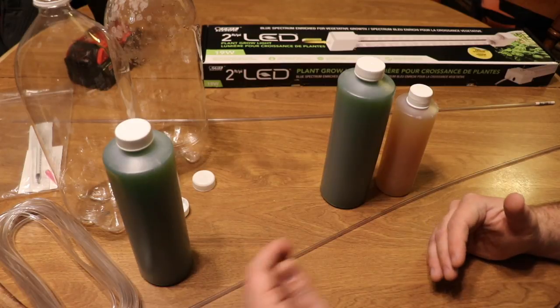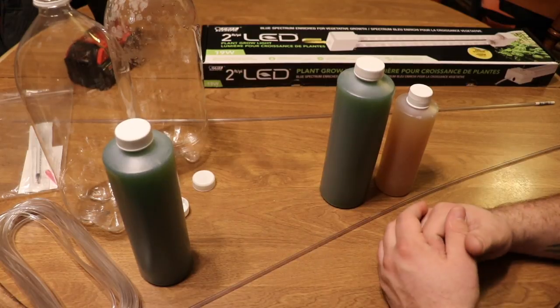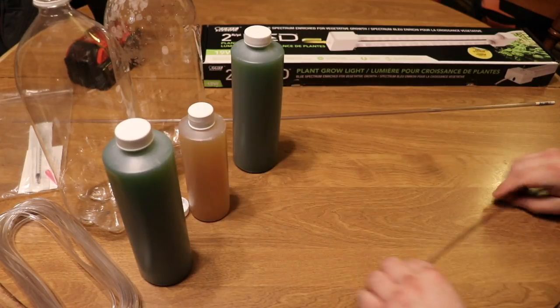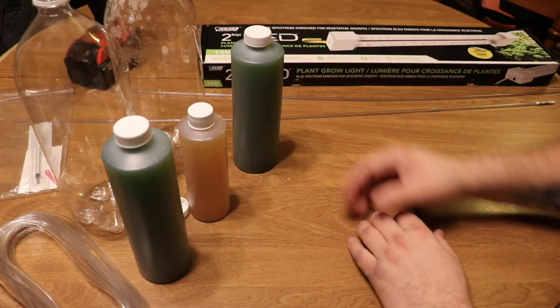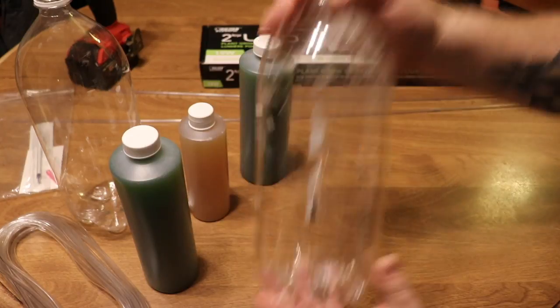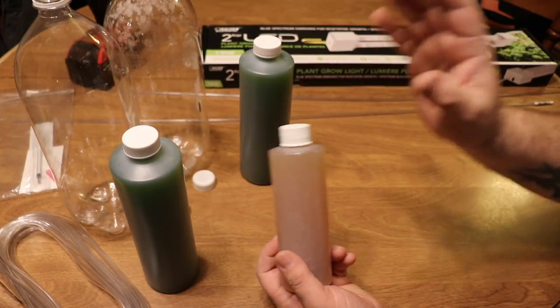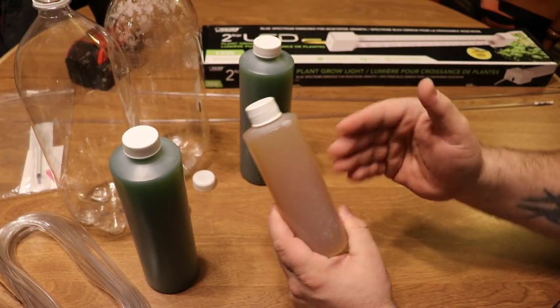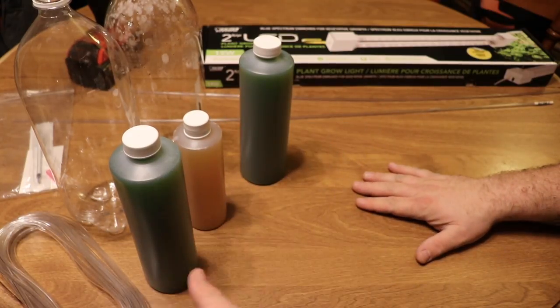We've got rigid airline tubing, airline tubing, an air pump, phytoplankton starter cultures, vessels to split the culture into, and F2. You don't have to get F2—I believe Fritz Aquatics makes a product now for culturing phytoplankton.